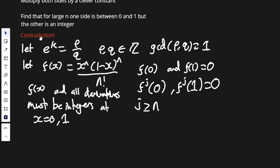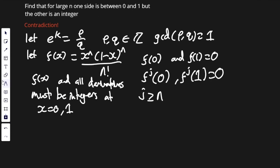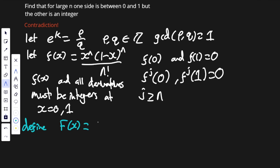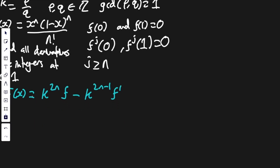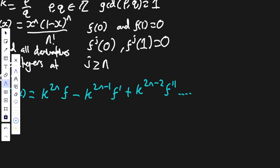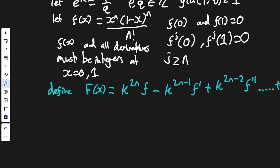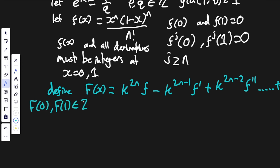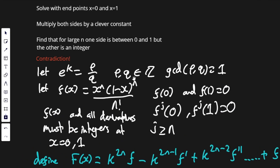This is really important because when we define capital F of x to be k to the 2n times f, minus k to the (2n minus 1) times f prime, plus k to the (2n minus 2) times f double prime, dot dot dot, plus f to the 2n — we get that F of 0 and F of 1 are integers. This follows because k is an integer, as we assumed at the top.